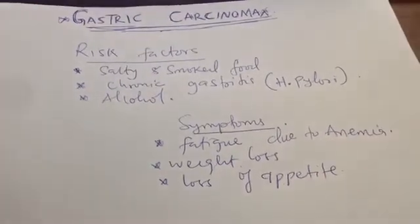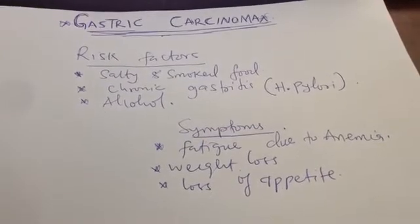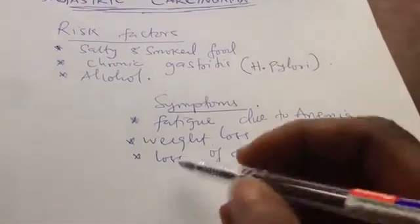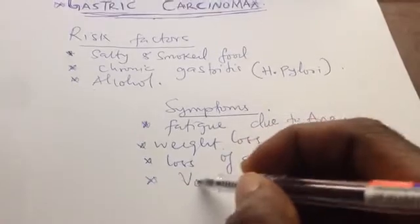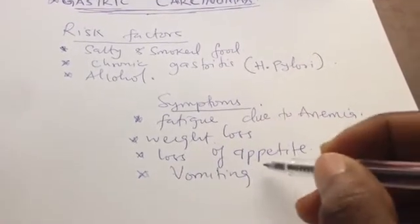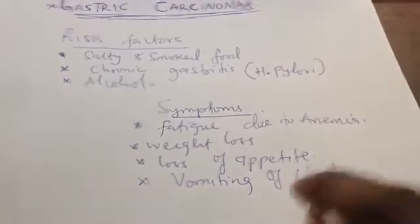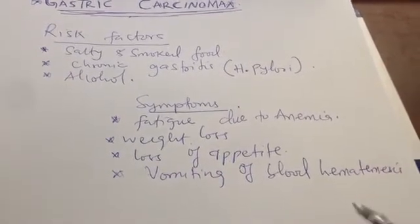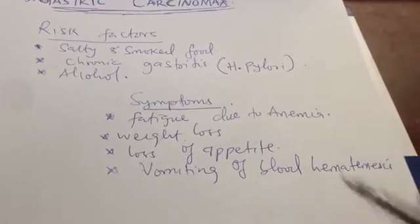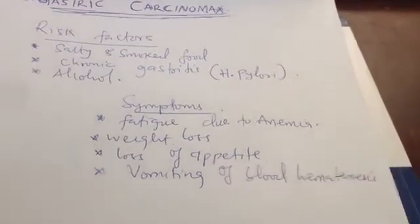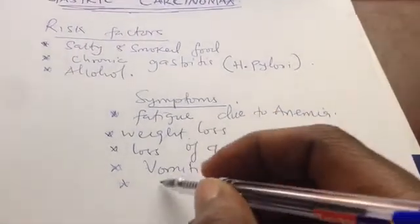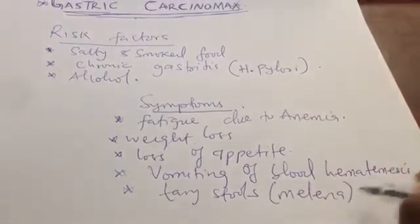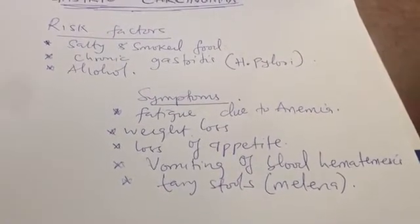Why does a person with cancer develop anemia? Almost all cancers can bleed. Due to this bleeding, the person may experience vomiting of blood, which is termed hematemesis. Due to this loss of blood, the person will experience fatigue from anemia. The person will also have dark stool known as melena, because the bleeding does not only exit through the mouth.